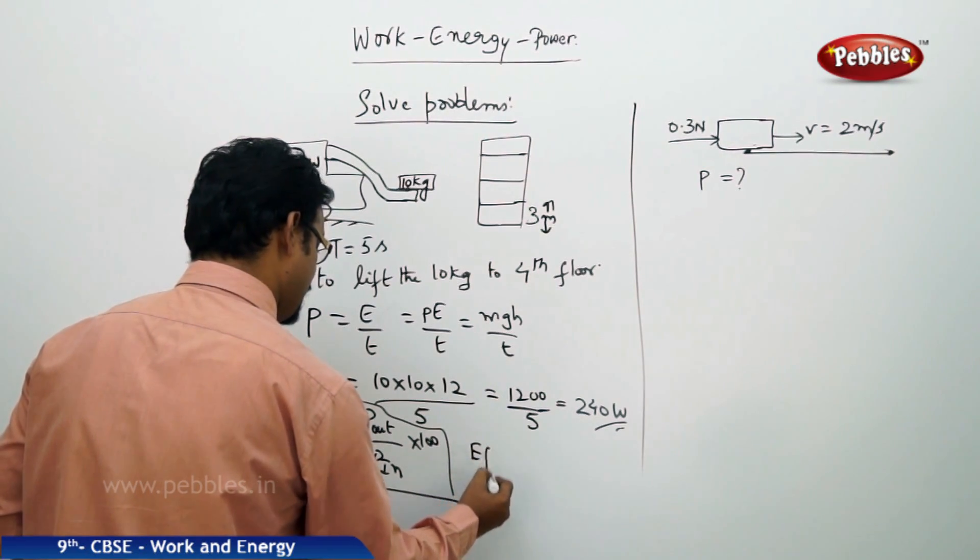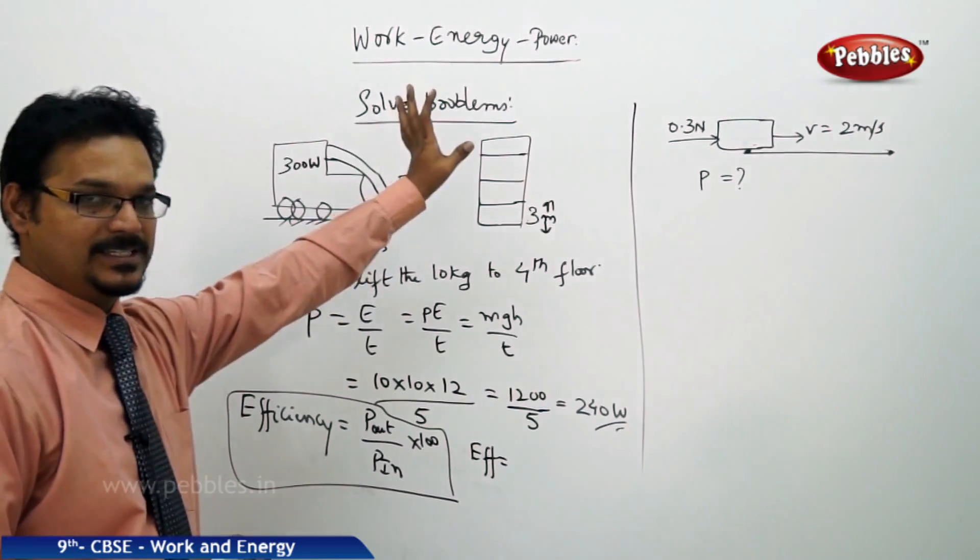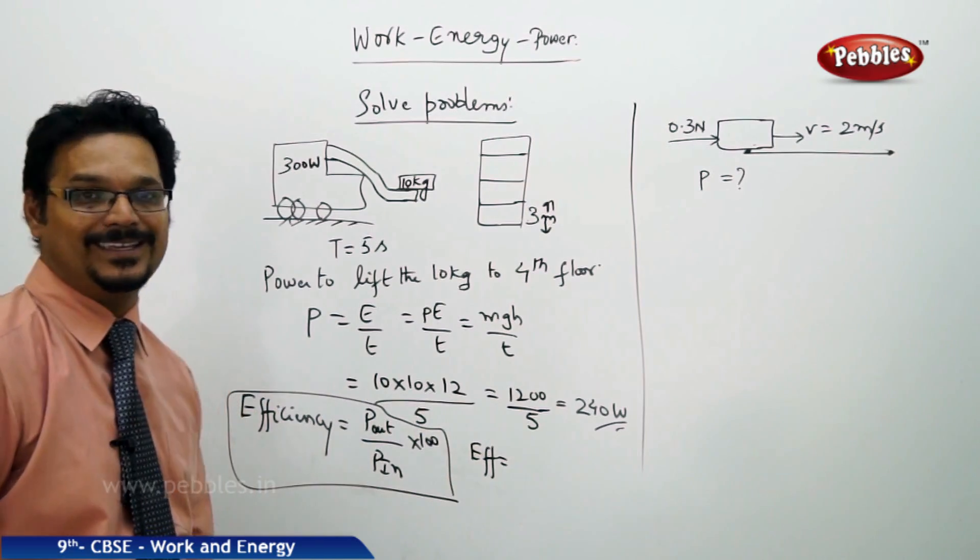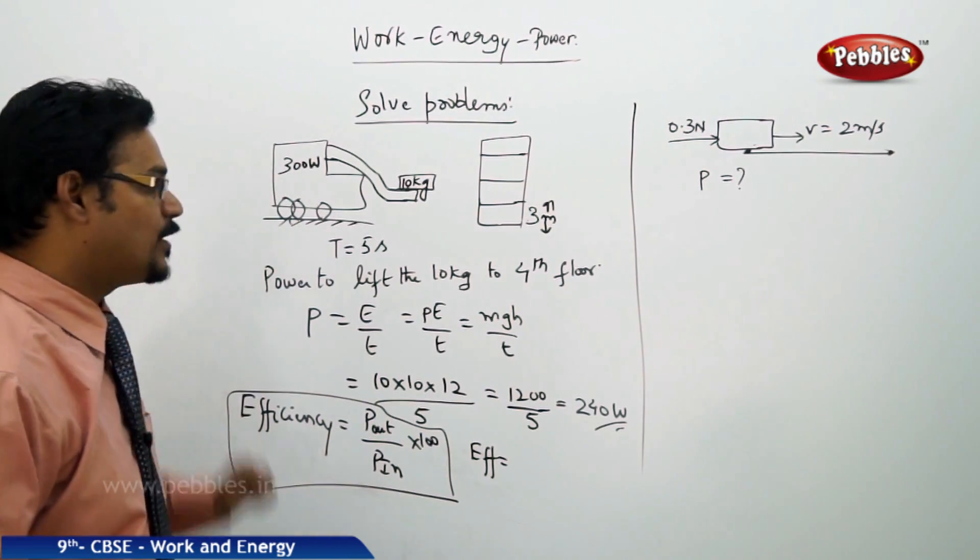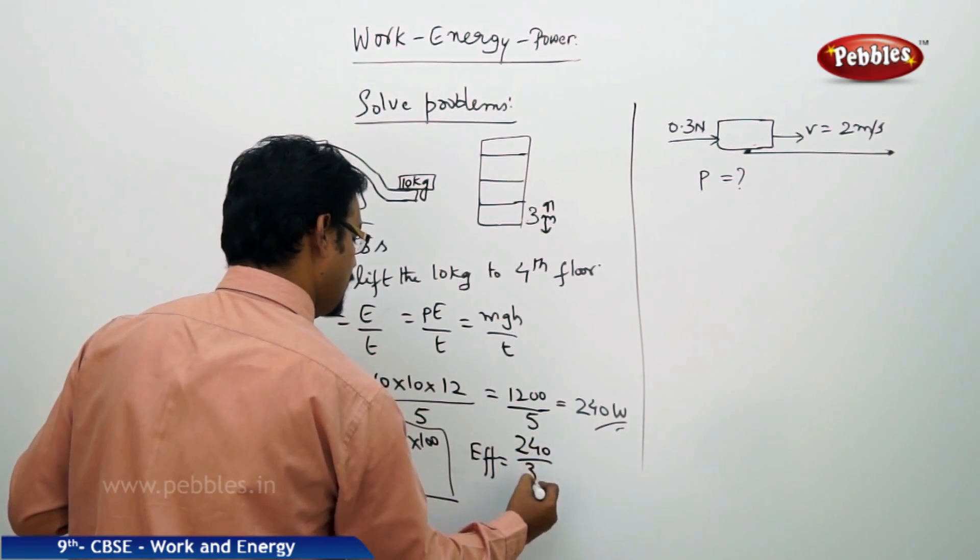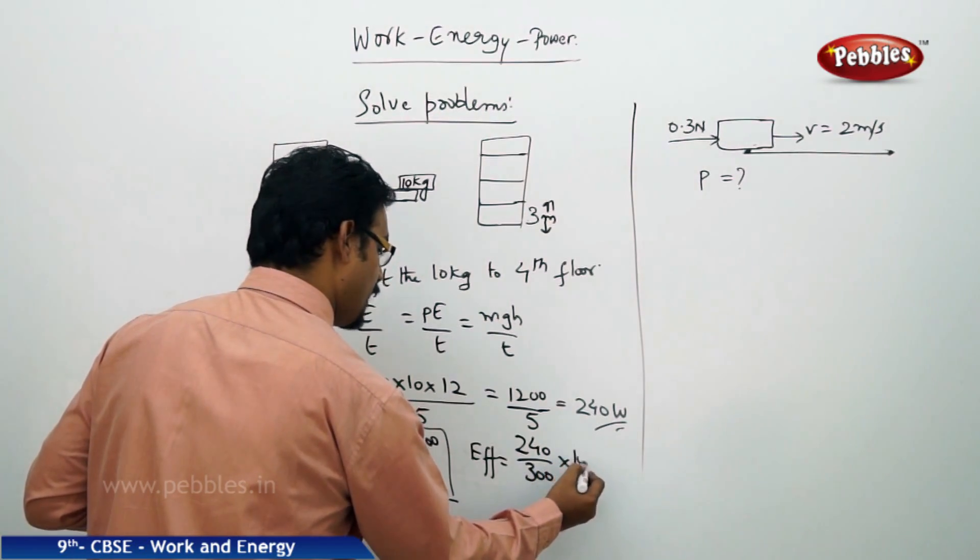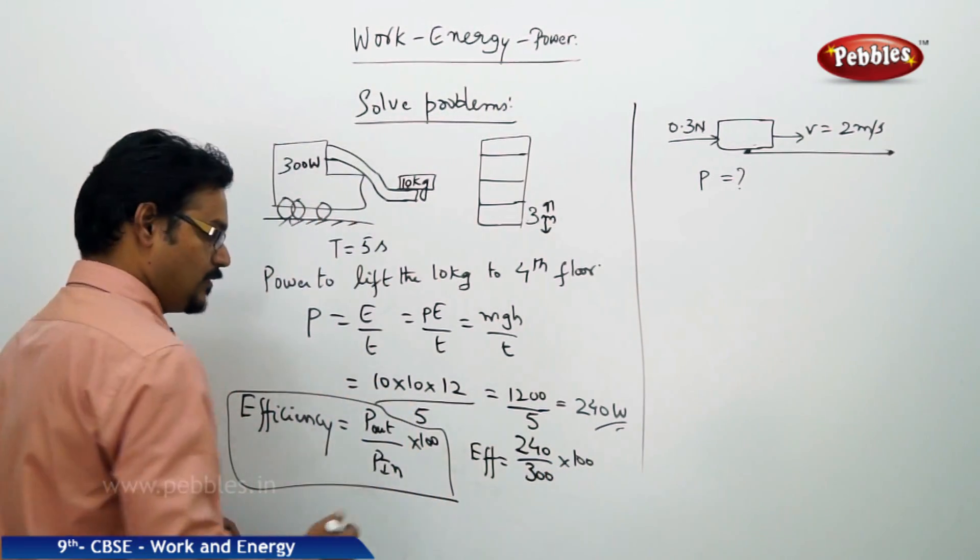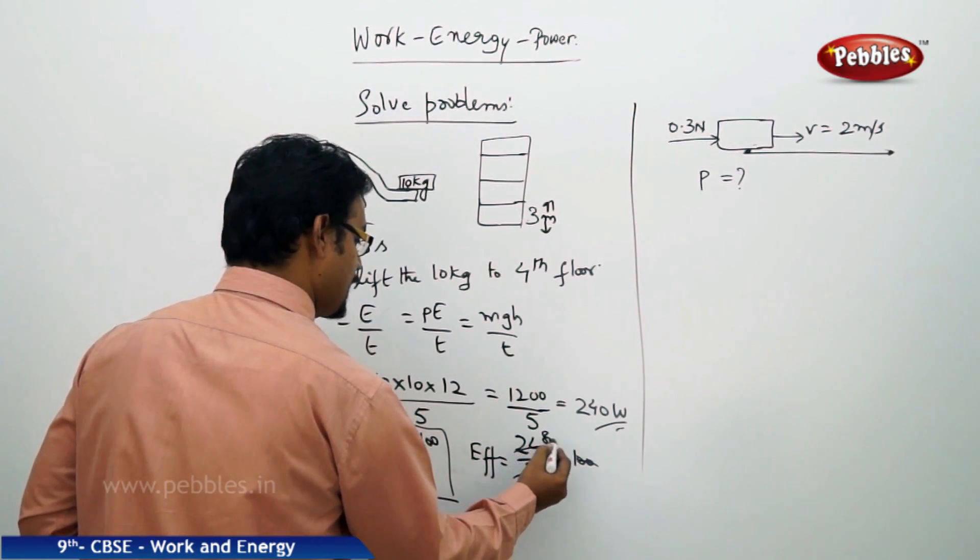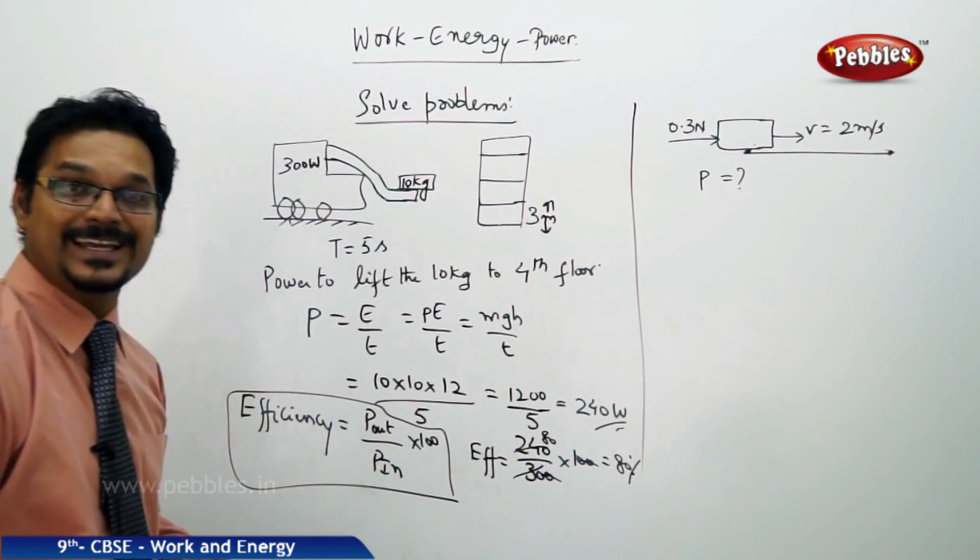Efficiency equals output power by input power into 100. What is the output power? How much work it has done and how much power it has consumed? This is output power 240. But actually the crane has 300 watts of power. So output power 240, input power is 300 into 100. If you see, 2 zeros cancel, now you will get 80. So the efficiency of the crane is 80.